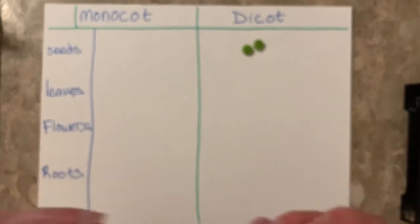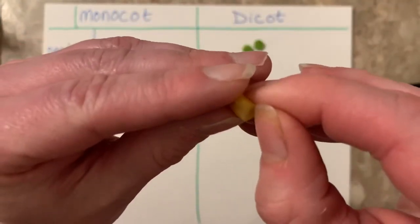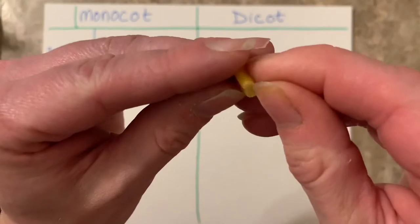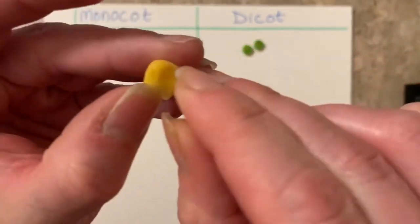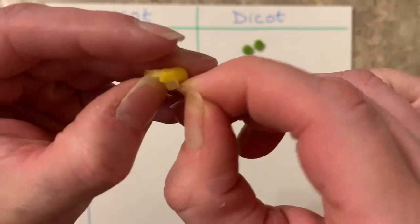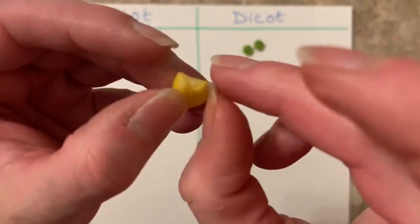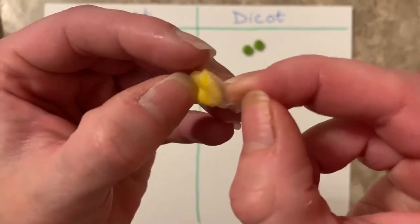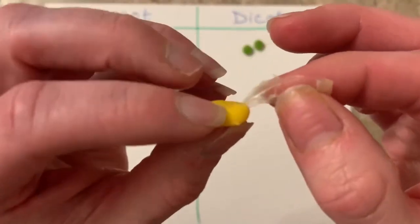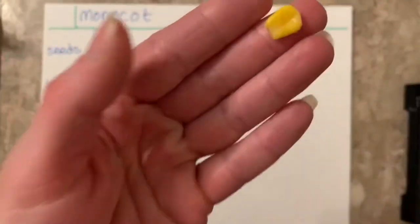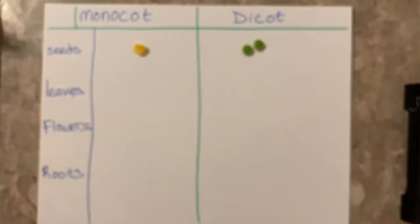And just to prove it, I'm going to take this corn and peel the skin off of it. We'll see what the cotyledon looks like underneath. There we go — that is a single cotyledon. So that's a monocot.